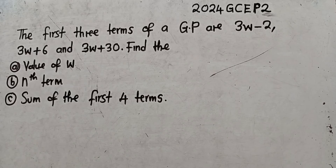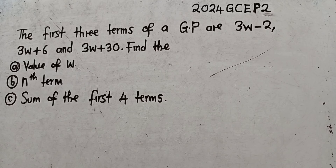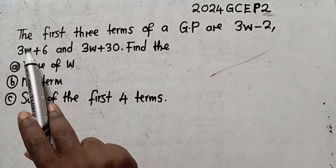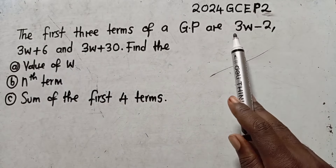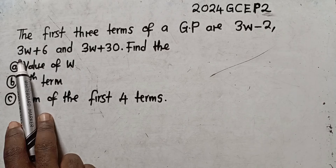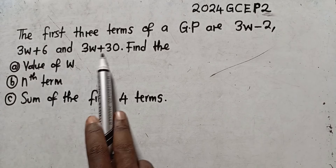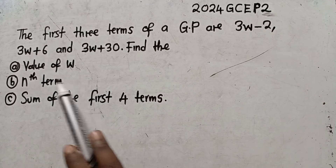Welcome to this session. This is the 2024 GCE Paper 2 Geometric Progression question. The question states: the first three terms of the GP are 3w minus 2, 3w plus 6, and 3w plus 30. Find the value of w.